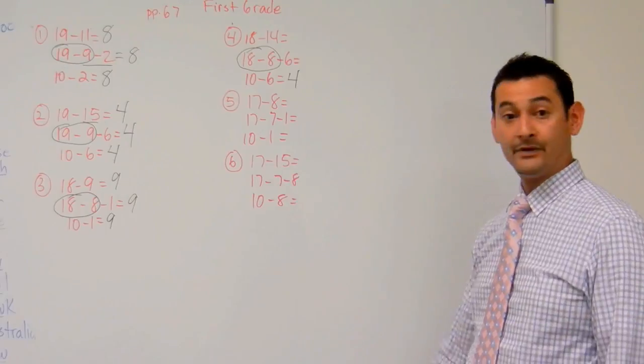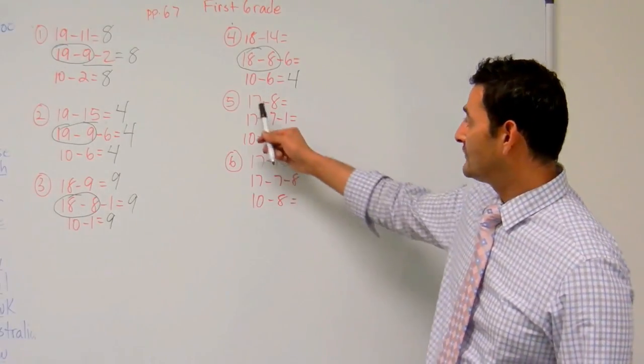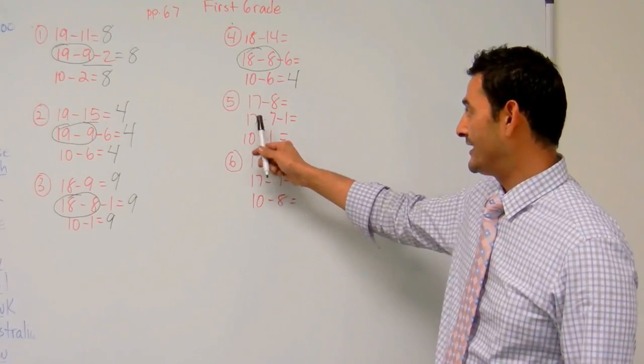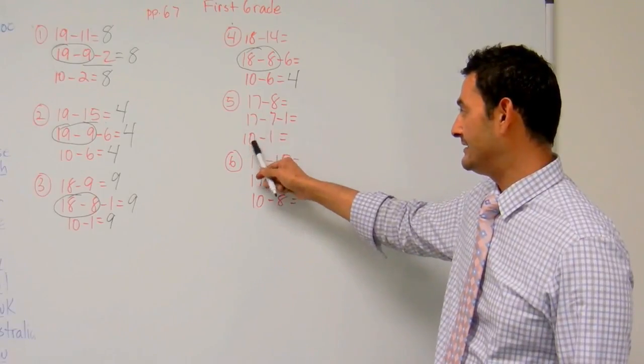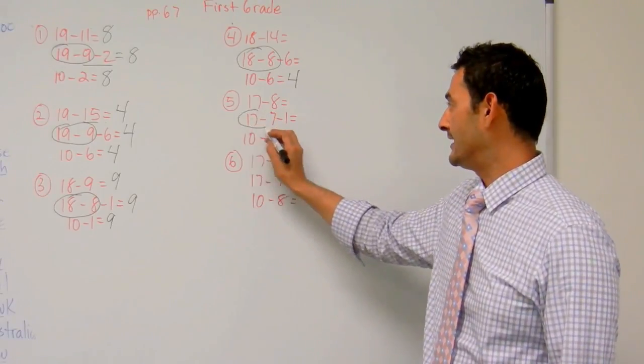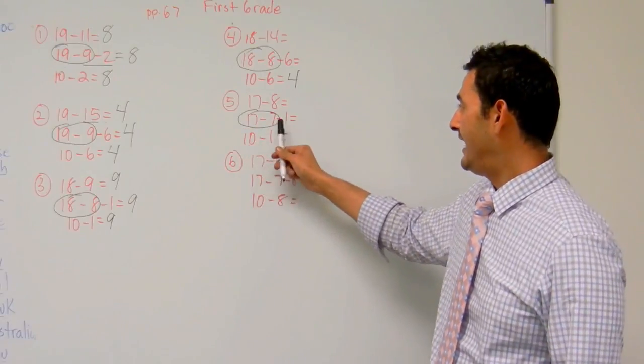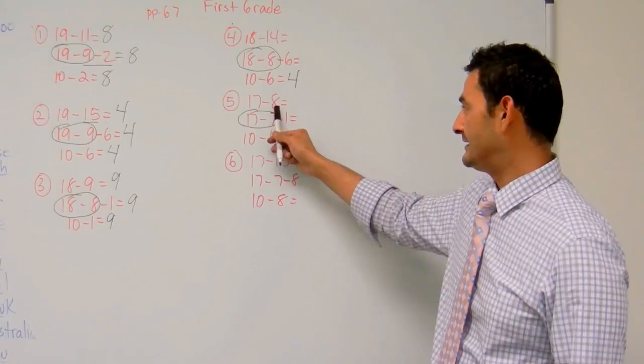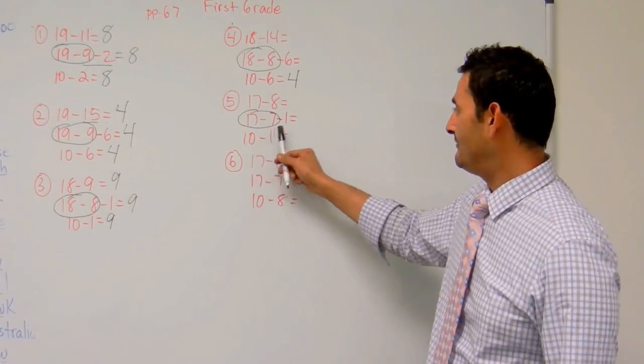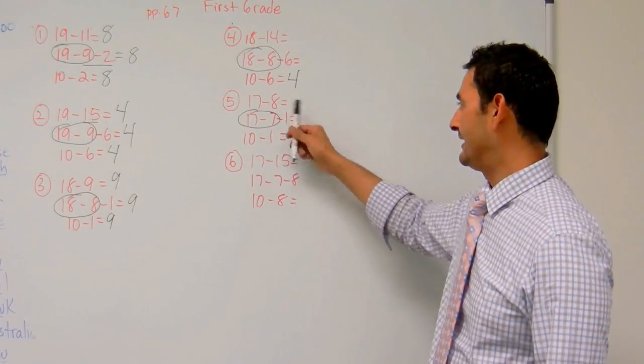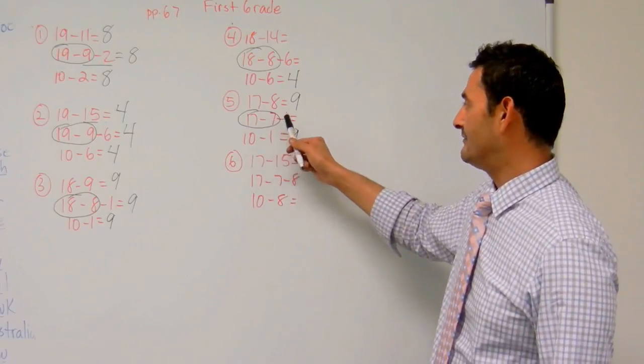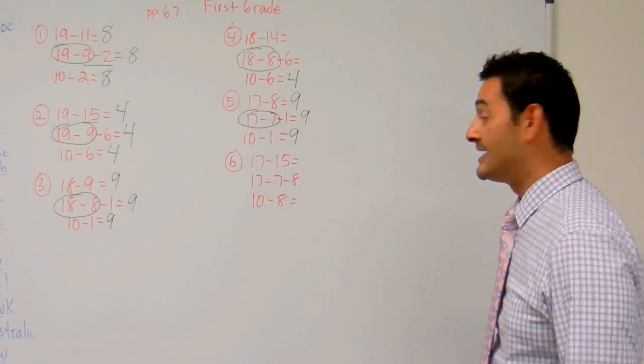Now let's take a look at number 5. Here we have 17 minus 8 equals. I want to get a 10 so I know that 17 minus 7 is 10. This piece here, that's going to be 10. And in order to make this a 7, it's going to be a 7 and a 1. That's equal to 8. So 10 minus 1 equals 9. And 17 minus 8 equals 9. And 17 minus 7 minus 1 also equals 9.